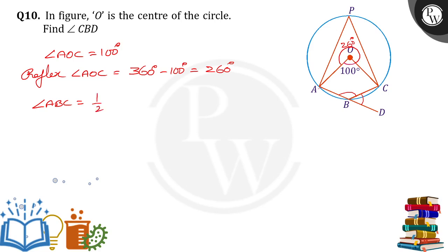Angle ABC is equal to half of reflex AOC. Now half into 260 degrees, then we will get, it cancels to 130 degrees. So angle ABC is 130.